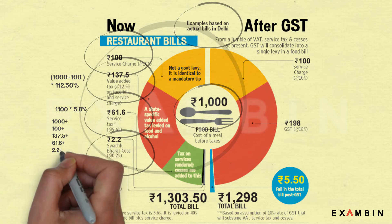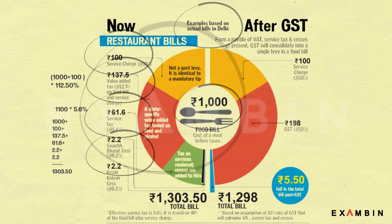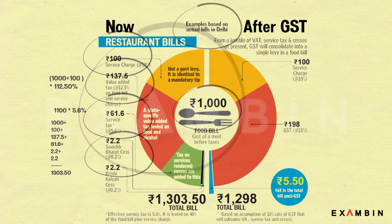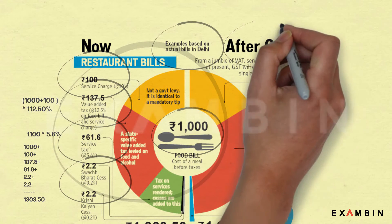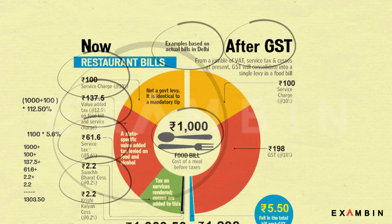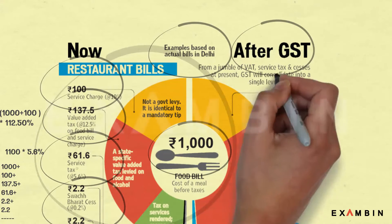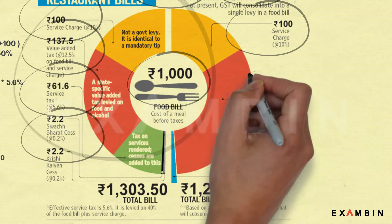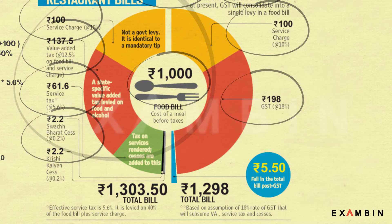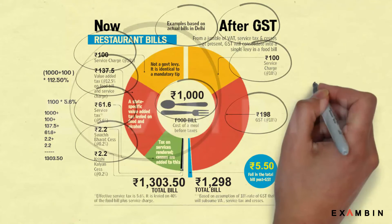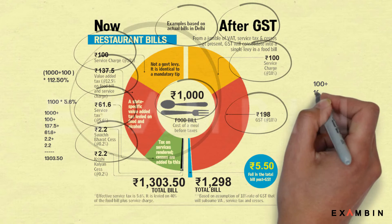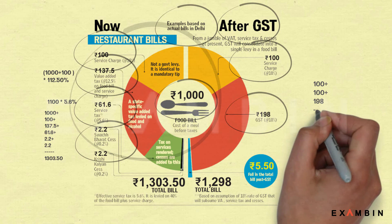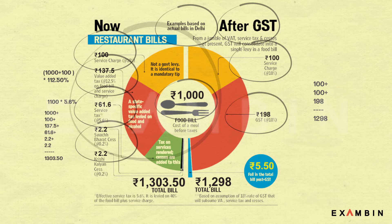Next we come to the GST bill. Here you have one single tax — GST — and a service charge. The service charge remains the same at one hundred rupees, and GST is 18% of the food bill inclusive of service charge. So 1100 into 18% gives 198 rupees. 198 + 100 + 1000 gives a total of 1298 rupees.